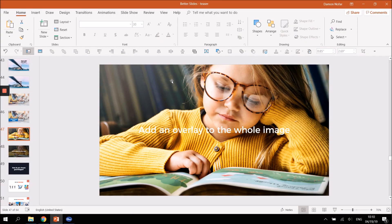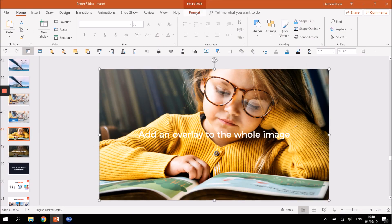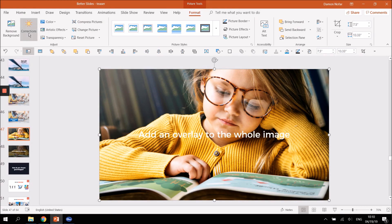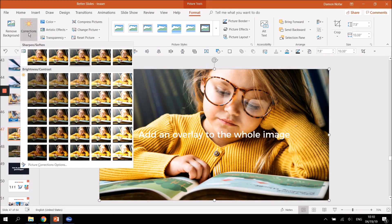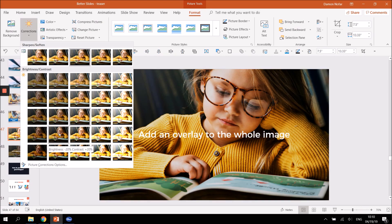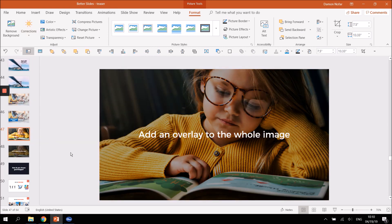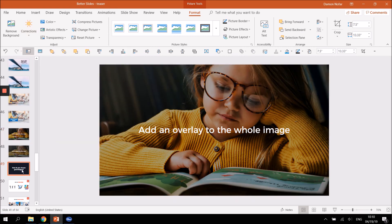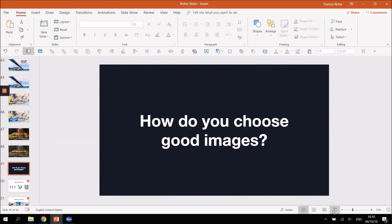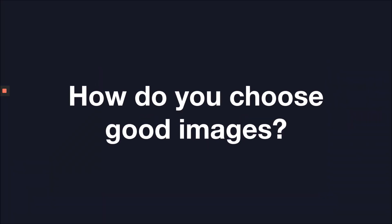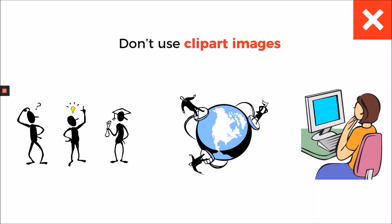If you don't know how to make your image darker in PowerPoint, it's very simple. Just click on the image, go to the Format tab, and under Corrections you can play with the brightness and contrast to find what works best. That's the easiest way of doing it. When it comes to choosing good images, start by not using clipart — these are very old school and won't help you tell your message.